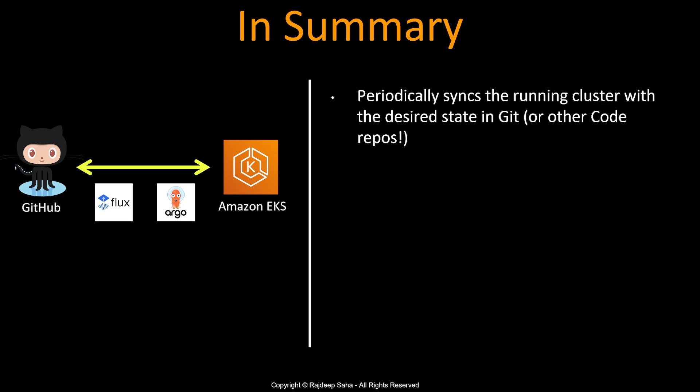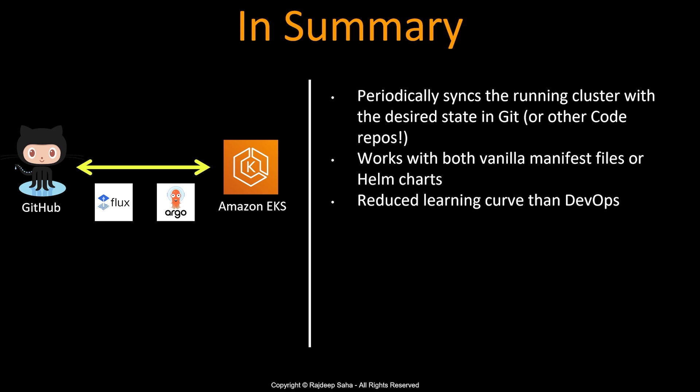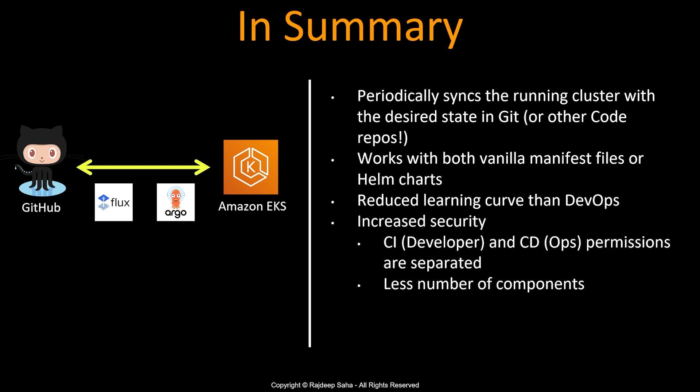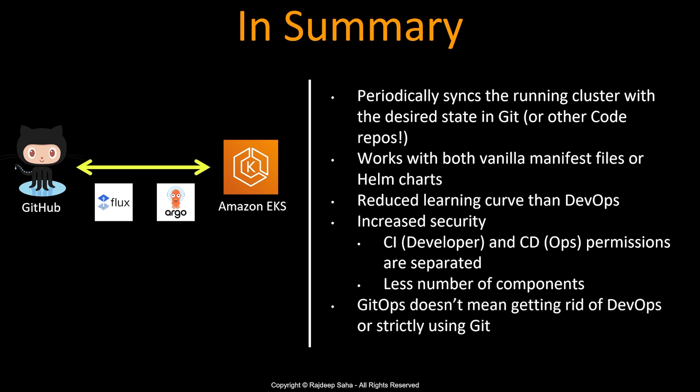In summary, GitOps periodically syncs the running cluster with the desired state in Git or other code repos. It works with both vanilla manifest files such as deployment YAML, HPA, etc., or with Helm charts. This enables a reduced learning curve compared to DevOps because the CD part is done using Kubernetes constructs — the team doesn't need to learn CD with traditional DevOps tools. It also increases security because CI and CD permissions are separated and there are fewer components. But GitOps does not mean getting rid of DevOps — the CI part is still done with DevOps tools.